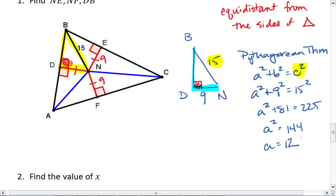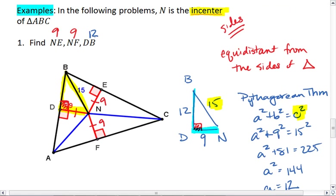A equals 12. That means, for this example, DB is 12.